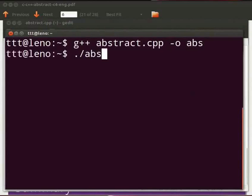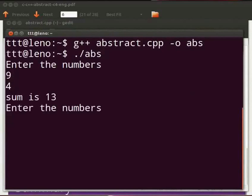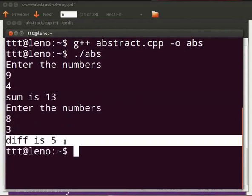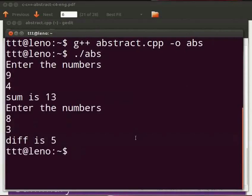Press enter. It is displayed as enter the numbers. I will enter as 9 and 4. The output is displayed as sum is 13. Again we see enter the numbers. I will enter as 8 and 3. The output is displayed as diff is 5. This brings us to the end of this tutorial.